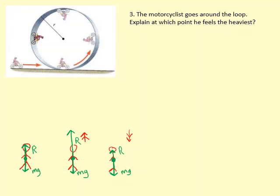The motorcyclist goes around the loop. Explain at which point he feels the heaviest. Now what does it mean he feels the heaviest? So this is to do with the reaction force that you feel.